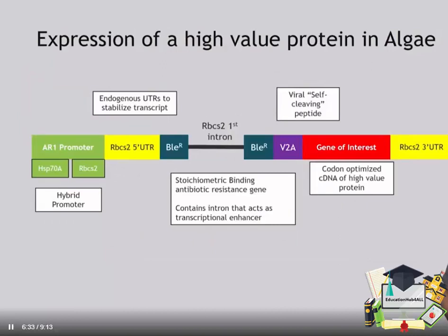Here we're showing an expression vector that we have used to express a high-value protein of interest. Going left to right, we can start with the AR1 promoter — a semi-synthetic promoter that utilizes the promoters of two highly expressed genes, HeatShoxMDA and RBCS2, to generate high recombinant protein expression. These promoters seem to act synergistically and give much higher expression than either single promoter by itself. In yellow are the 5' and 3' untranslated regions of RBCS2 that stabilize the mRNA transcript. The integration of this transgene is selected for using the bleomycin resistance cassette, which stoichiometrically binds to bleomycin or zeocin antibiotics and leads to the selection of only very high expressing clones.